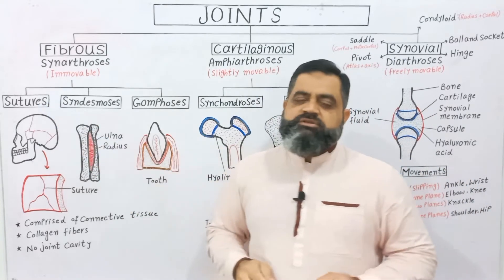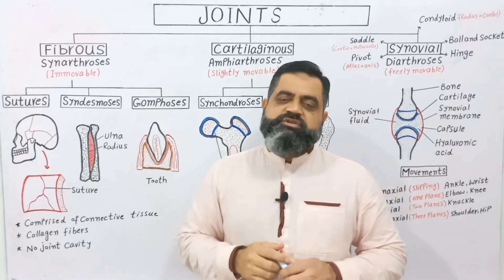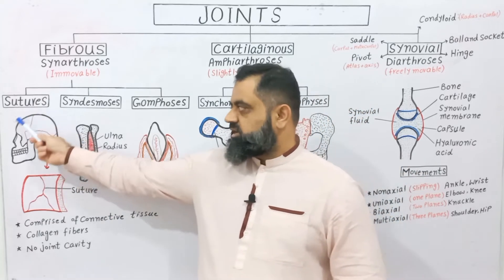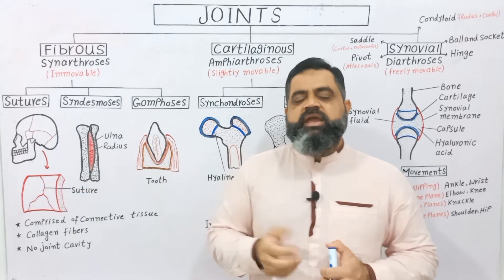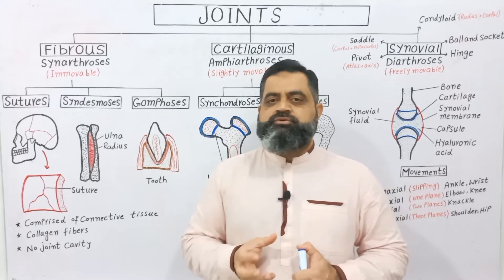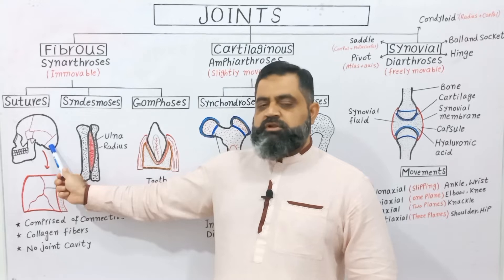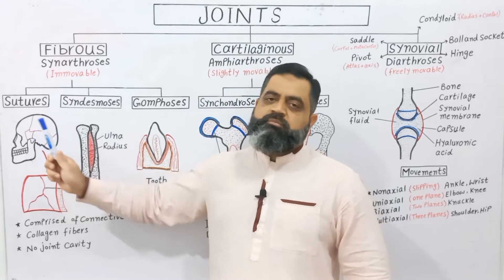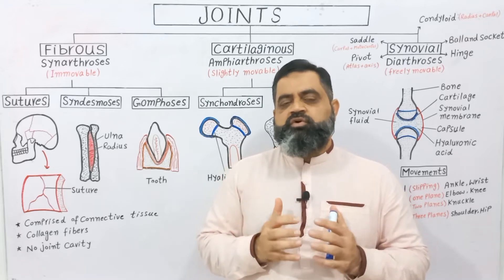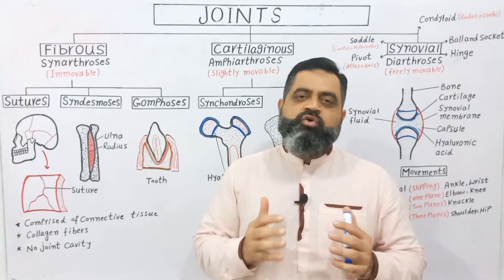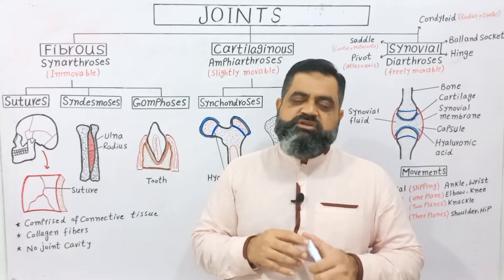Sutures are specialized fibrous joints present in the cranium, which is a part of our skull. The cranium is composed of flat bones — the frontal bone, occipital bone, parietal bone, and temporal bones. These bones are held together with fibrous connective tissue along with collagen protein to form a very strong bond, which are known as sutures.